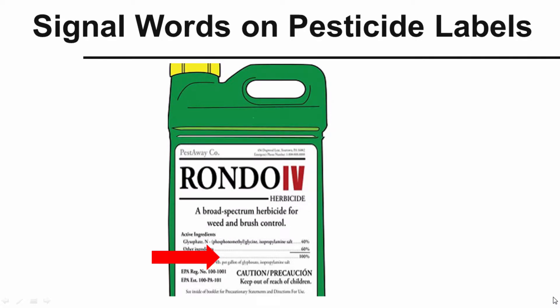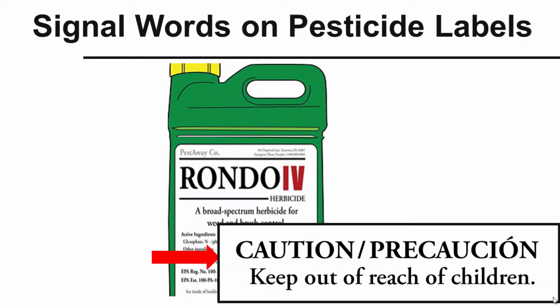When you have a pesticide, at first glance, how do you know how dangerous or toxic that product is? Well, that's what we want to take a look at. EPA requires that manufacturers put signal words on the label. The signal word is going to be our first clue to how dangerous the product could be.